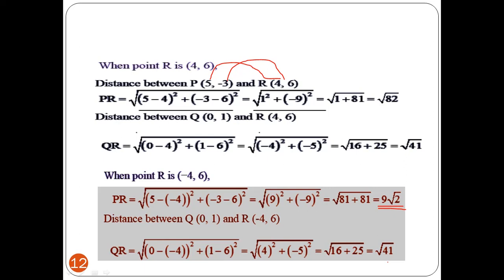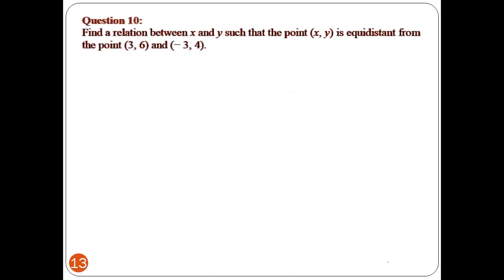The last question in this exercise, question 10: Find a relation between x and y such that the point (x, y) is equidistant from the points (3, 6) and (-3, 4). When there are two variables, we cannot find specific values, so we find a relation between them.